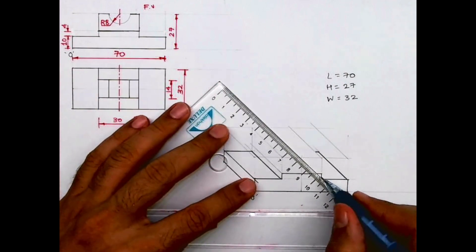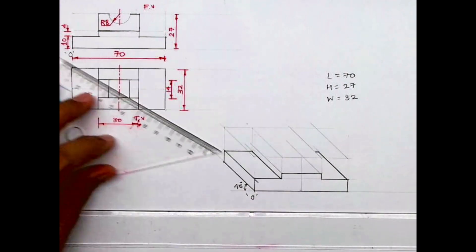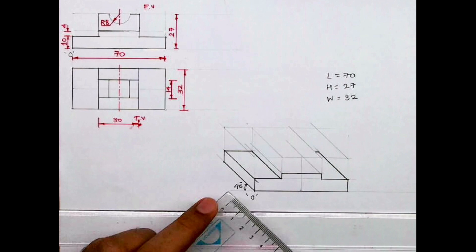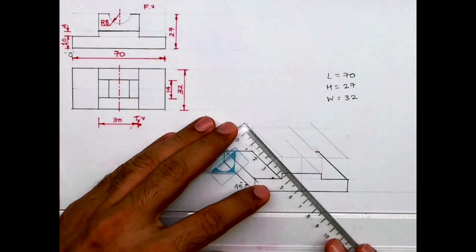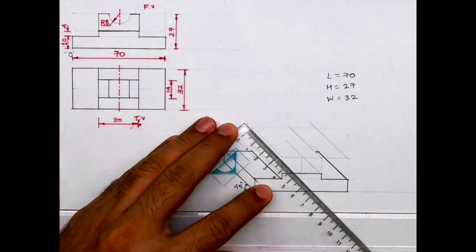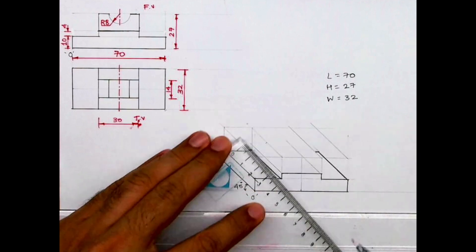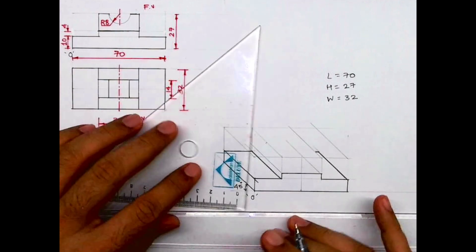Then you take this line behind. Now what we can do, we can find the midpoint and we can take 7-7 because in between that is 14. Part two width is 14. So I will take midpoint and I will take 7-7 on both the sides.